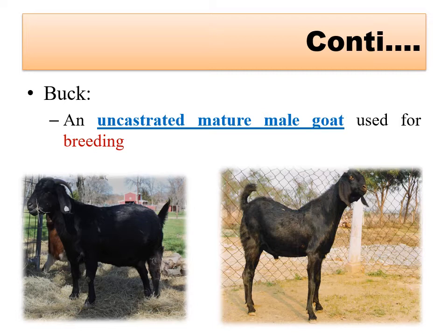Castration is also performed in sheep and goat. In cattle and buffalo, castration is for transport/draft purposes. In sheep and goat, castration is done because it eliminates testosterone production, so the energy needed for reproduction is diverted to growth, increasing the growth rate so animals can be sold for meat at an earlier age.